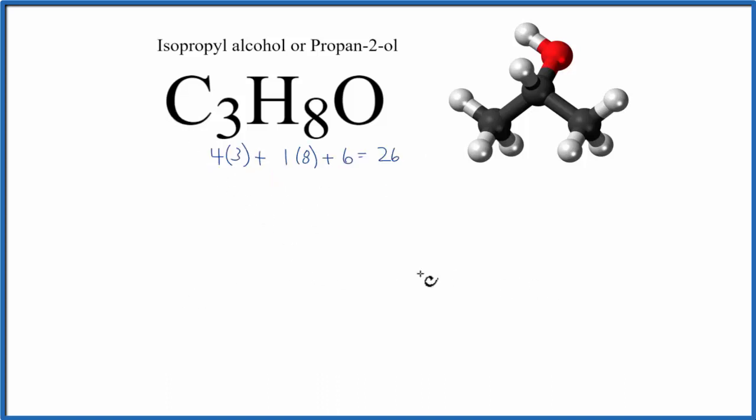So let's put our three carbons in a row here, and then we have eight hydrogens and one oxygen. So this is an alcohol, that means it's going to have an OH group. Here's our oxygen and hydrogen. In the picture we can see it's stuck on the central carbon here.